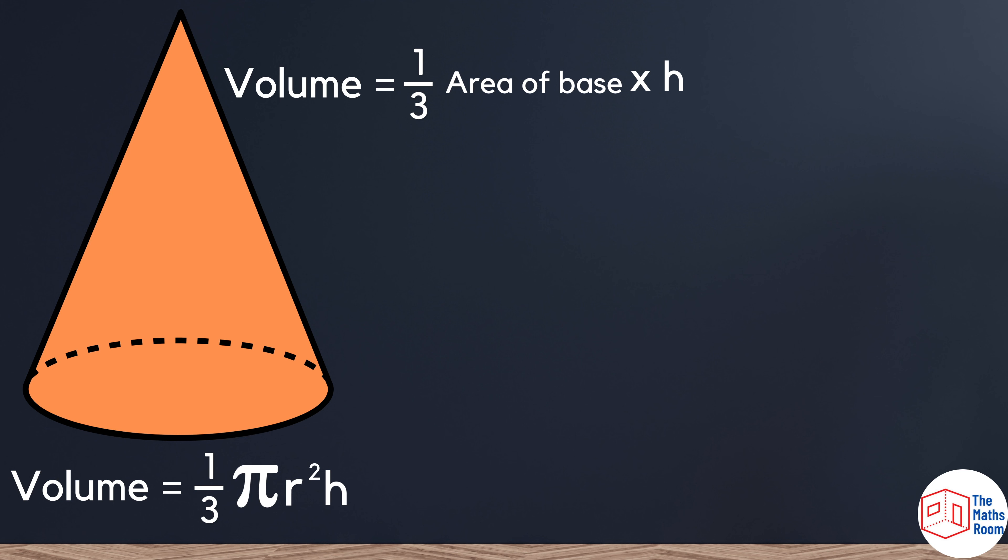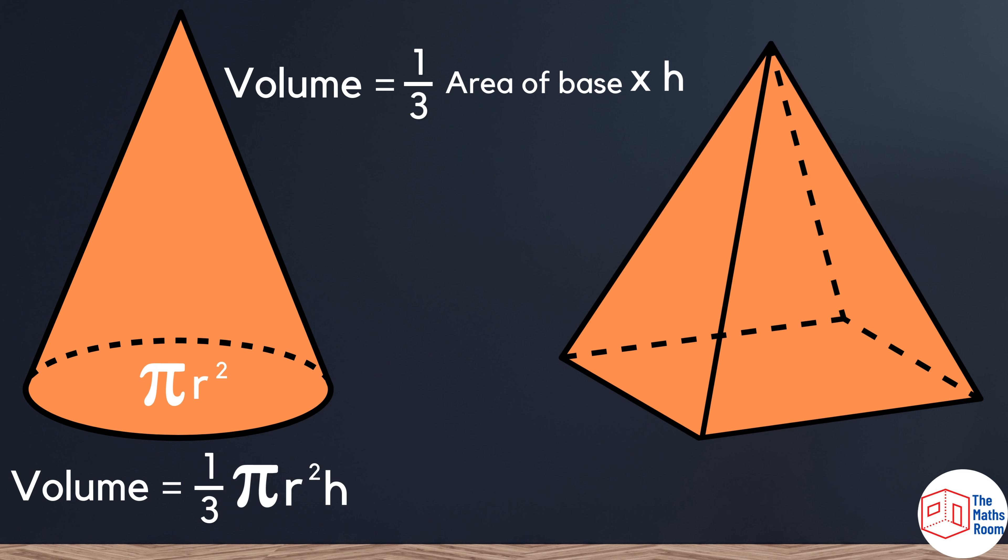The area of the base of a cone is πr². That's the area of a circle. Looking at the base of a square base pyramid, that would just be length times width. Now you know how to backward engineer the formula that is given to you to calculate the missing details.